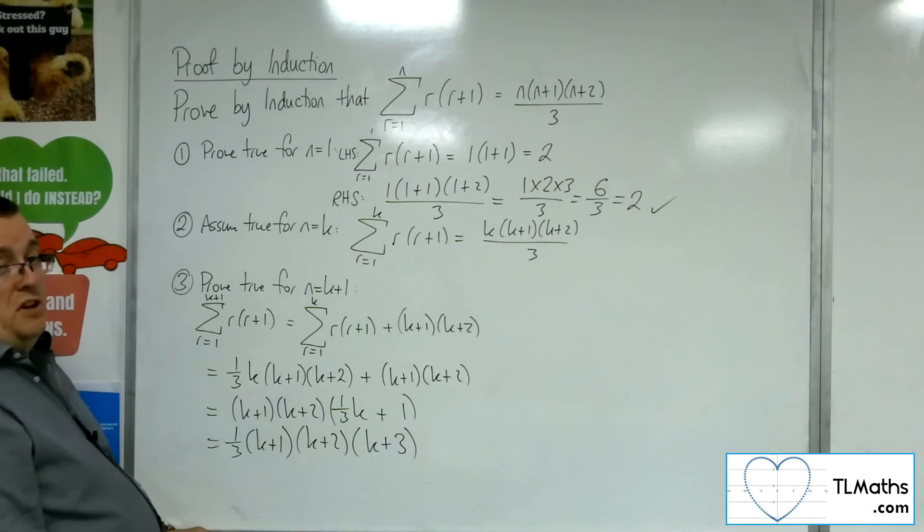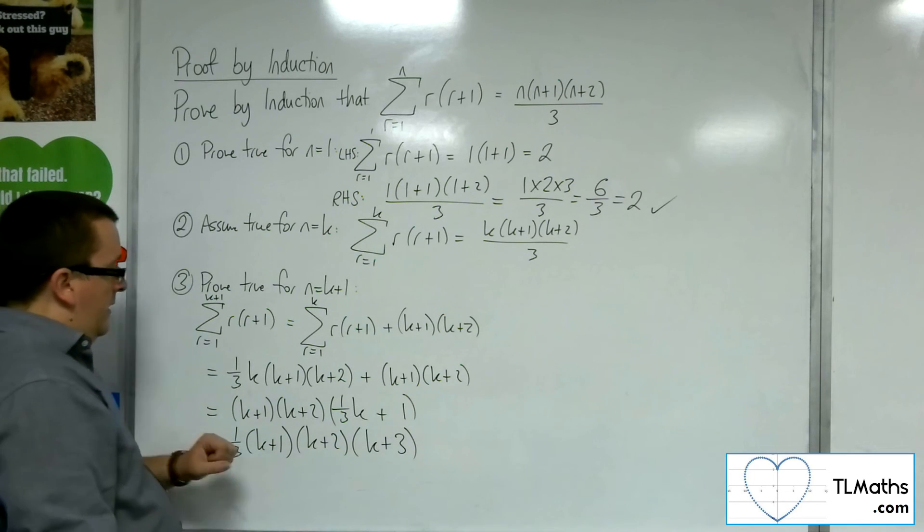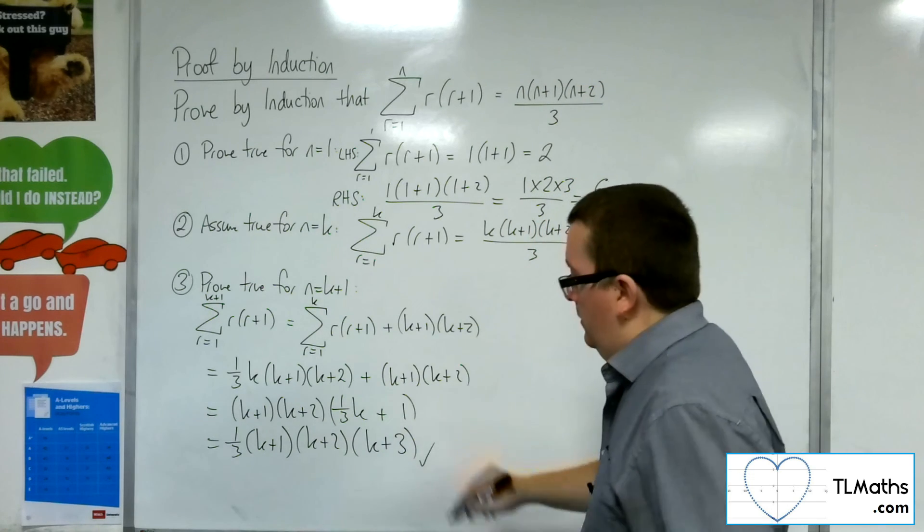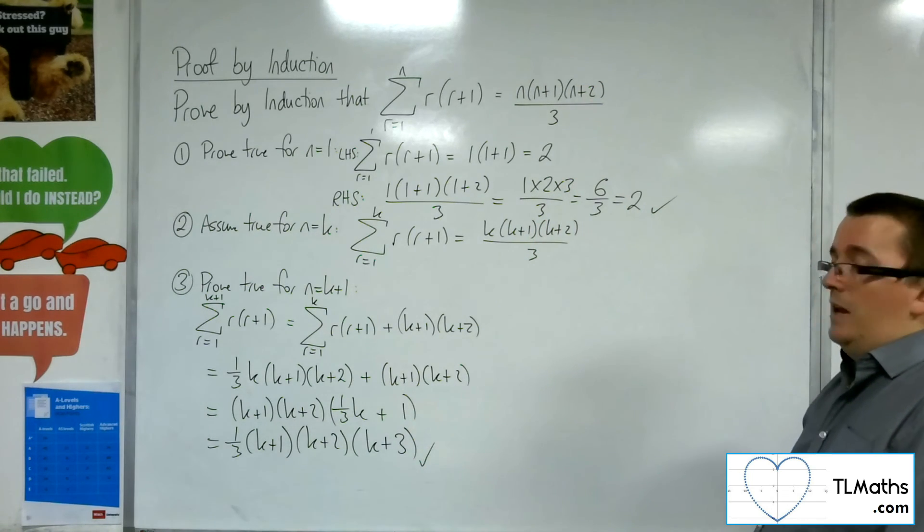And we have precisely what we wanted. k plus 1 times k plus 2 times k plus 3. And so it's true for n equals k plus 1.